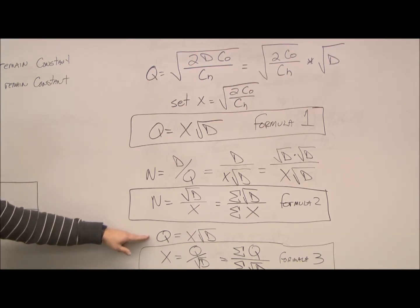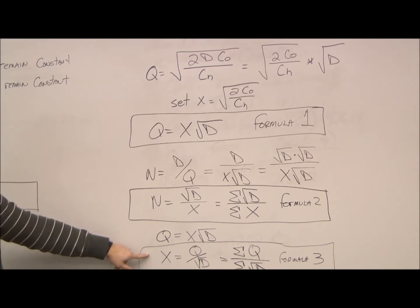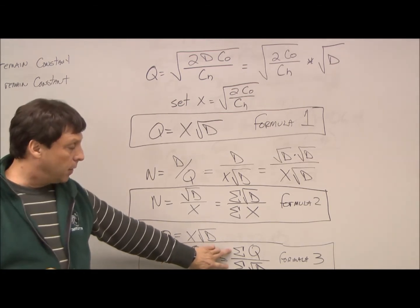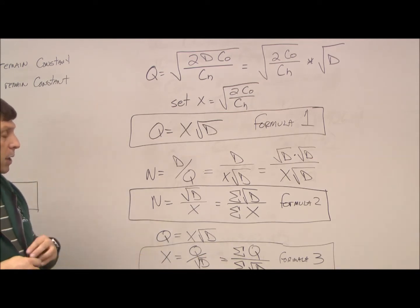Likewise, we have Q equals X times square root D from formula one. If we solve for X, we can do the summations of our Q's and the summations of our square root D's to equal our X. We're going to use these three formulas and we'll be able to solve this problem.